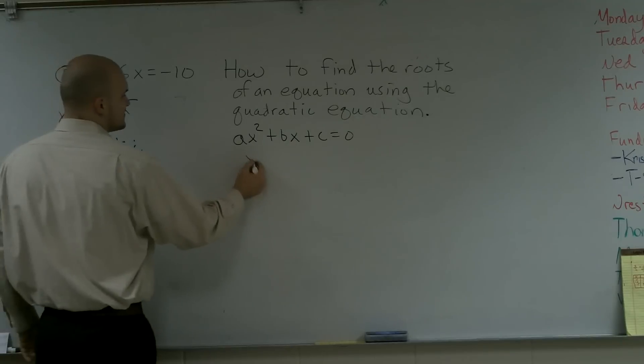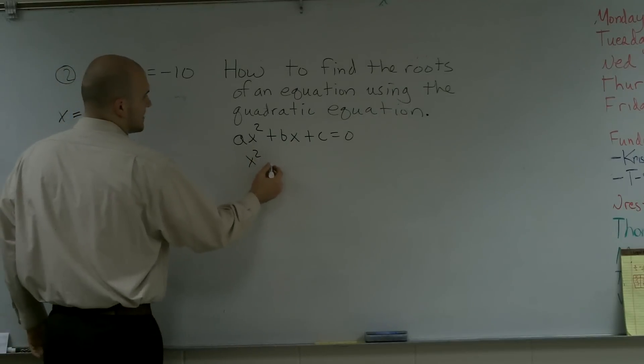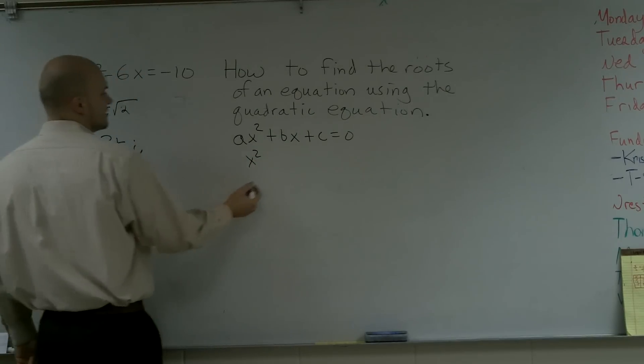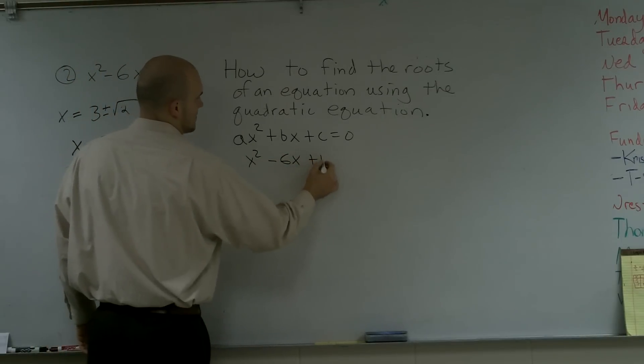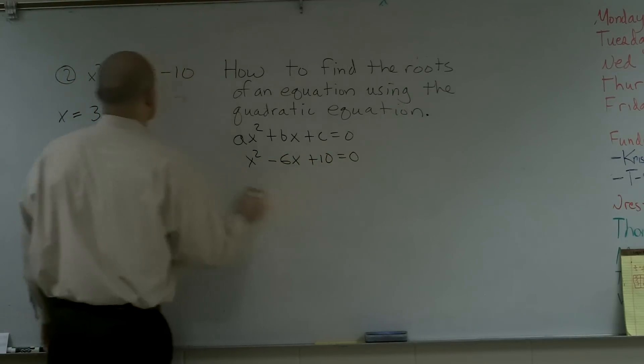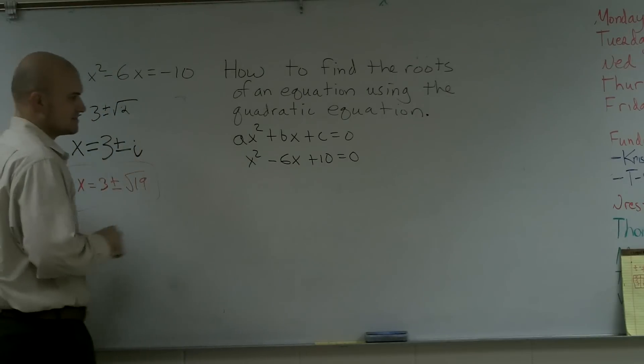So the first thing we're going to do, I'm going to transfer this to ax squared plus bx plus c equals 0 form. What I did was I added the 10 to both sides to get a positive 10.